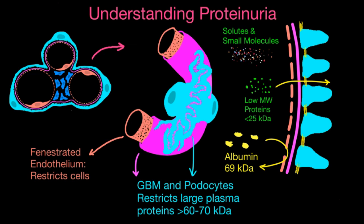Both the podocytes and endothelial cells contribute to formation of the GBM. In summary, the GBM and podocytes work together to exclude large proteins like albumin, allow low molecular weight proteins through, and most importantly, let all the small molecules and solutes — like sodium, potassium, and glucose — be filtered through the glomerular filtration barrier. This filtrate is what eventually becomes the urine.